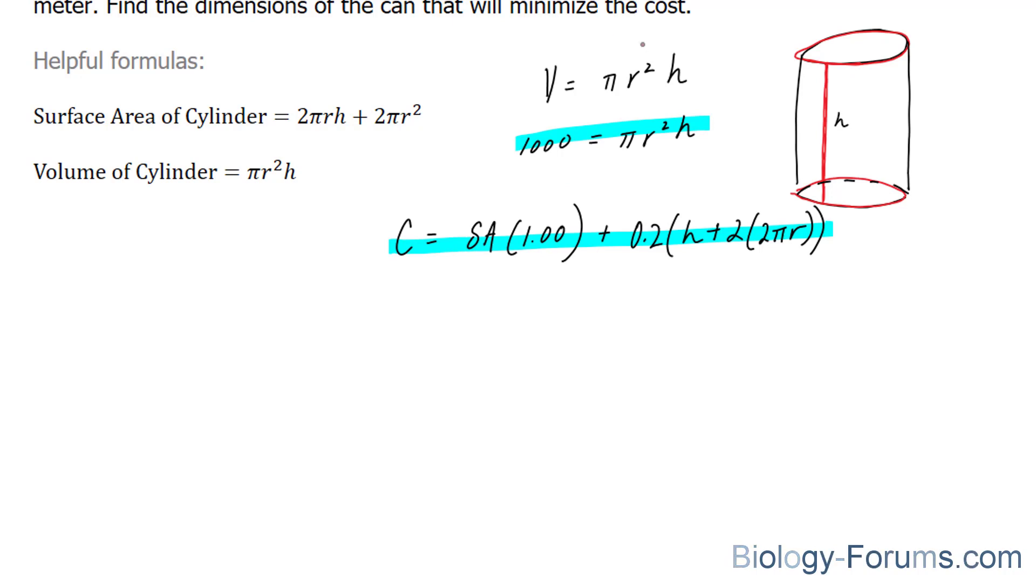So what I'm going to do next is isolate for either r or h in this formula. It really doesn't matter which one you isolate for. I'm going to isolate for h, because it's the easier of the two. If I isolate for h, I end up with 1000 over pi r squared equals h. And now I'm going to take this h value and plug it into this formula.